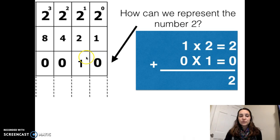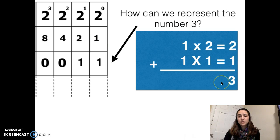Similarly, if we wanted to represent the number 2, we would want to put a 1 in the second spot. 1 times 2 is 2, and a 0 in the first spot. 0 times 1 is 0. Add them together, and you get 2. If we wanted to represent the number 3, we would want to put a 1 in the 2 spot and a 1 in the 1 spot. That would give us 2 plus 1, which equals 3.